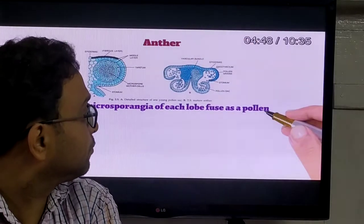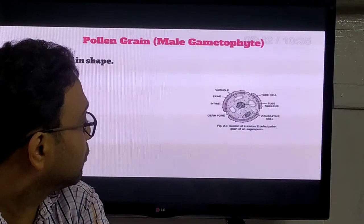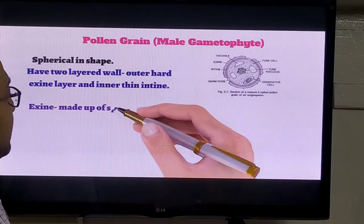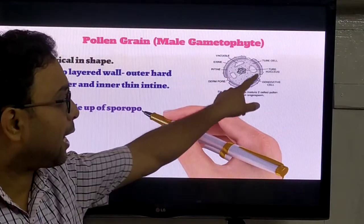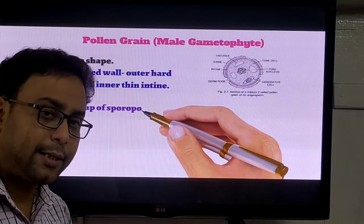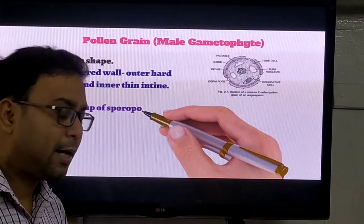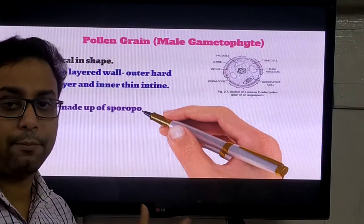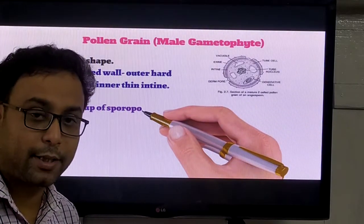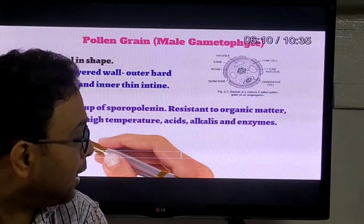Now we discuss the structure of pollen grains in some details. Pollen grains are spherical in shape. They have an outer region called the exine and an internal region called the intine. Inside the pollen grains, there are two types of cells: one is the vegetative cell, another one is the generative cell. This is the structure of the pollen grains which are produced in the anther.